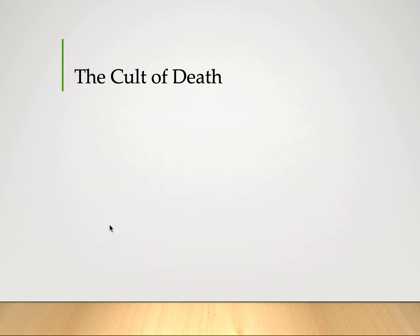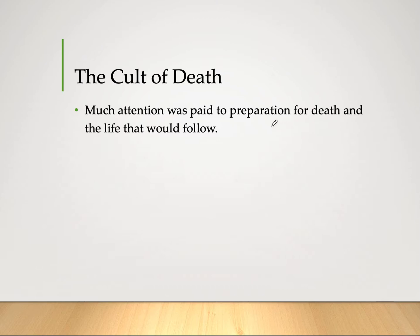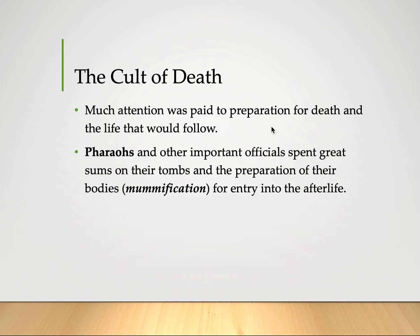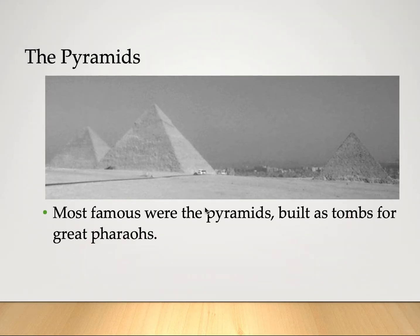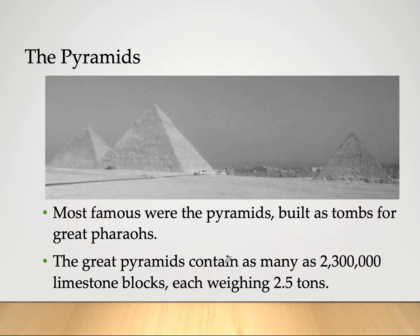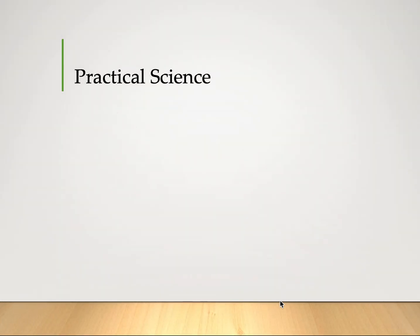They also had a cult of death. From the pharaohs, the tombs and the pyramids — much attention was paid to preparation for death and the life that would follow after death. Pharaohs and other important officials spent great sums of money on their tombs, preparation of their bodies through mummification, and their entry into the afterlife. The most famous were the pyramids built as tombs for the great pharaohs. The Great Pyramids contain as many as 2,300,000 limestone blocks, each weighing 2.5 tons.